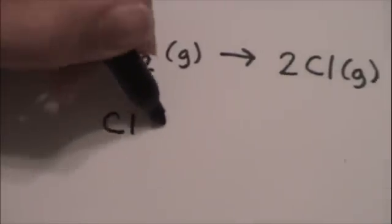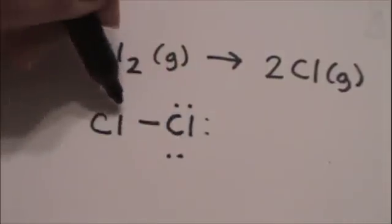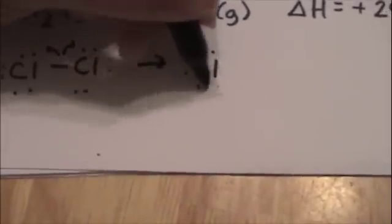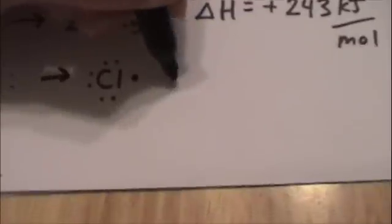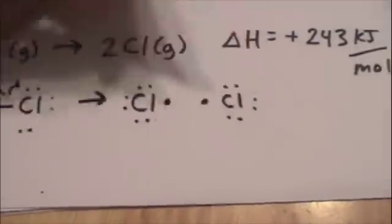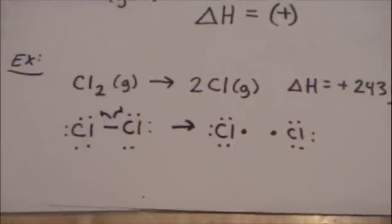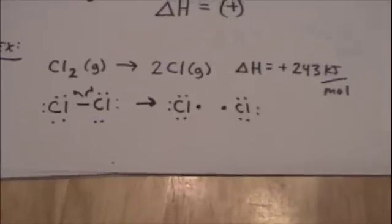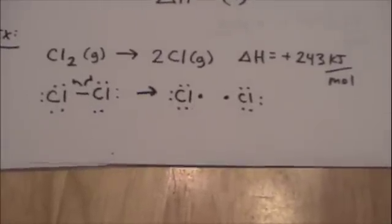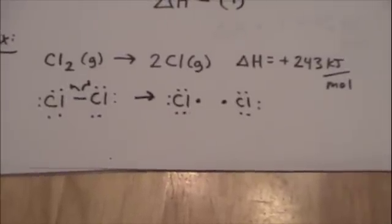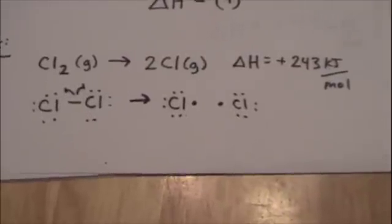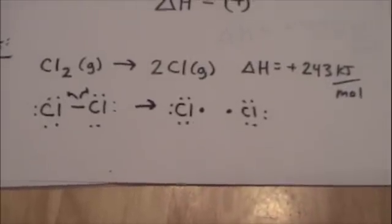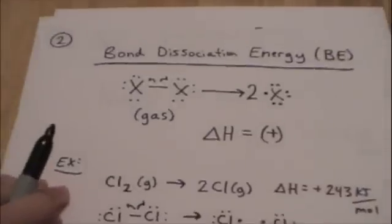So let's draw the Lewis structure for Cl2. And if we break this bond homolytically, we're going to get a Cl radical and then another Cl radical. That's just symbolized by saying two Cl gases. The delta H or the bond dissociation energy for that reaction is positive 243 kilojoules per mole. It's going to take energy to break that bond. That's the bond dissociation energy.